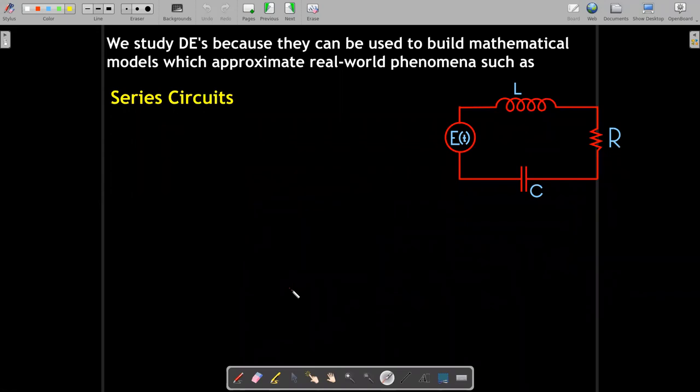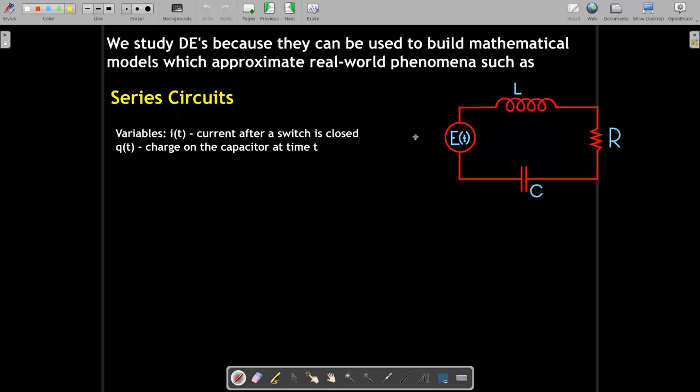Another application is circuits. In fact, you could really base an entire differential equations class just based on studying circuits. So we will go back to these types of circuits. We're looking at circuits in series where we may have an inductor with inductance L, a resistor with resistance R, and a capacitor with capacitance C. And we have the impressed voltage measured here, E of t. So there's two functions that we may be referencing, the current and the charge. And there's a connection between these two, and that I of t is dq dt.